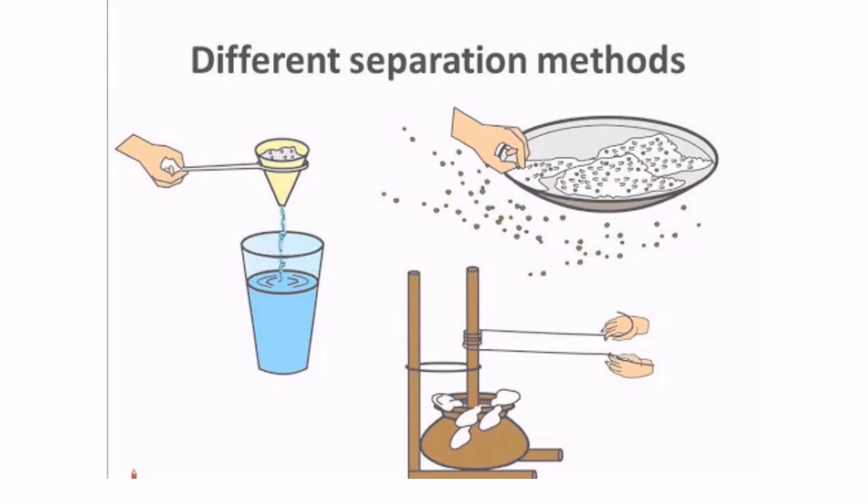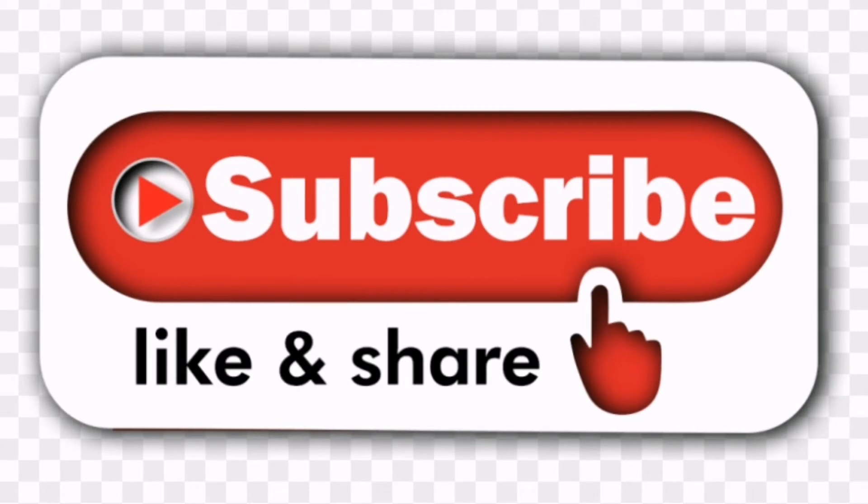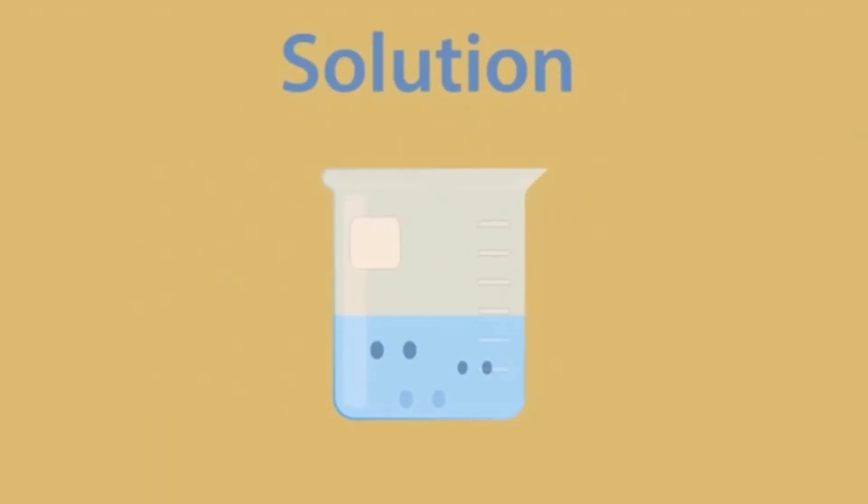But don't forget to hit like and subscribe. A solution is a mixture of two or more substances in the same phase. This is formed when a solute dissolves in a solvent. A solution can also be formed when two or more miscible liquids are mixed together. For example, when ethanol and water are mixed together, a solution is formed.